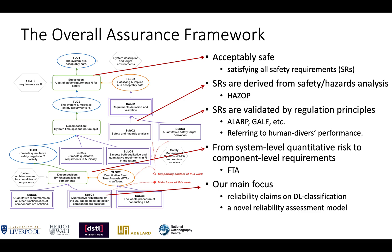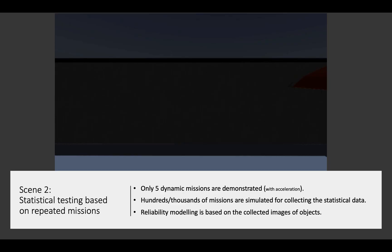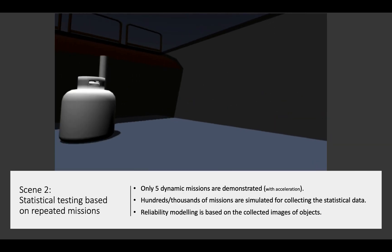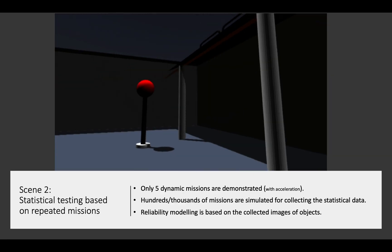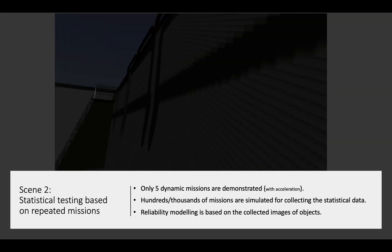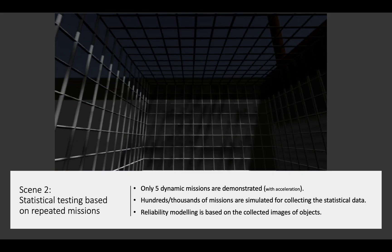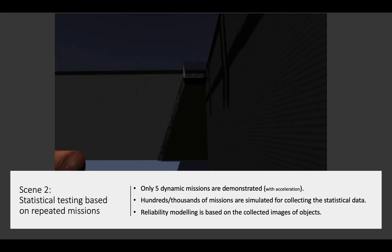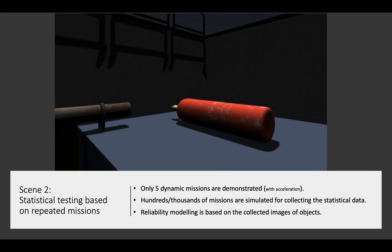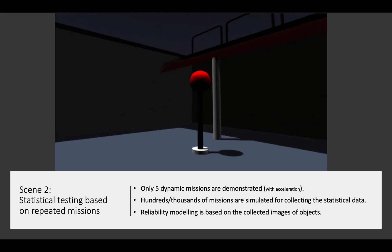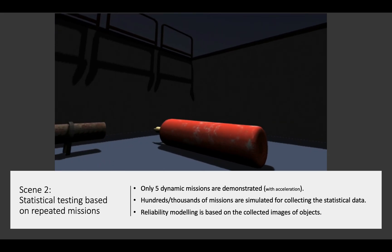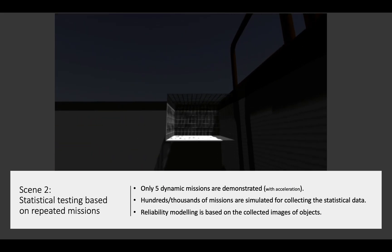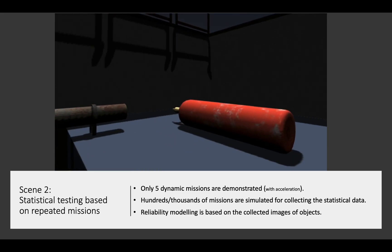Our reliability assessment model is based on statistical testing evidence collected in repeated missions. In this clip, we are showing five repeated missions in which we can observe the images of objects collected in those dynamic missions are different, because of the random noise factors. In this way, a large number of missions is simulated for collecting the statistical data, based on which we do reliability assessment modeling.